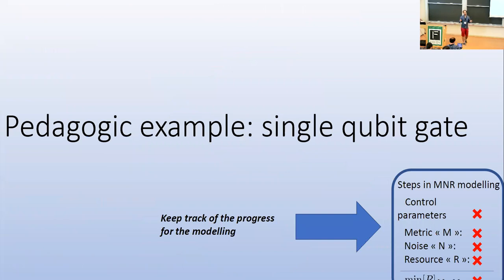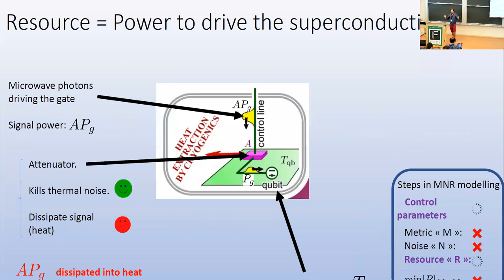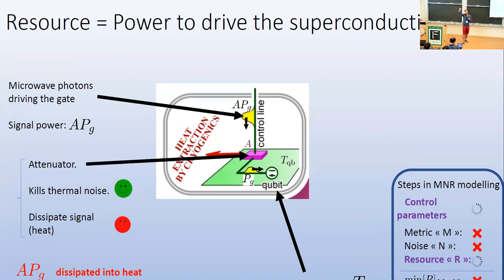I will first give a pedagogic example of a single qubit gate, then move to a more complete model of quantum computers. For a single qubit gate in superconducting qubits, the qubit sits inside the cryogenics; you send microwave pulses through a coaxial cable and they interact with the qubit to make the gate. In practice, experimentalists place an attenuator — a big resistor that dissipates much of the signal. This is because signals are generated at room temperature and carry a lot of thermal noise. The attenuator dissipates both the signal and the thermal noise, ensuring the qubit thermalizes at its intended temperature.